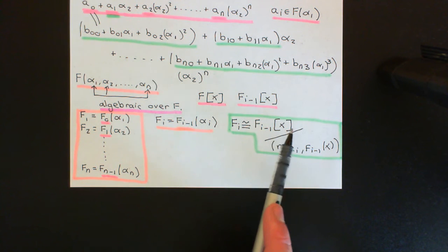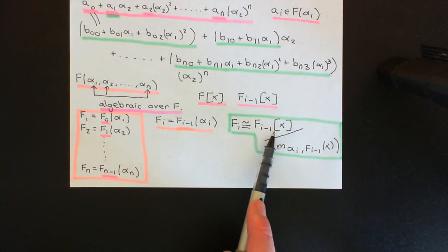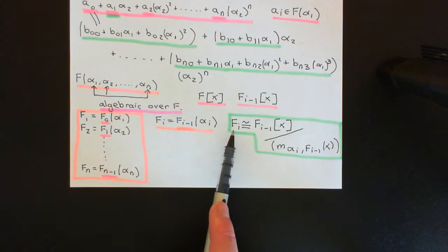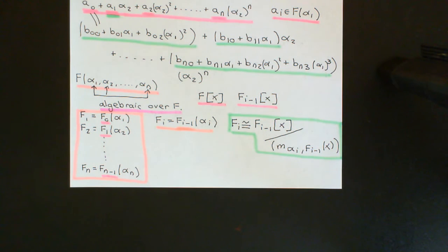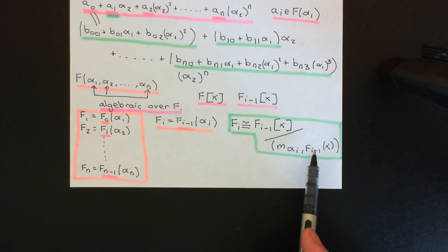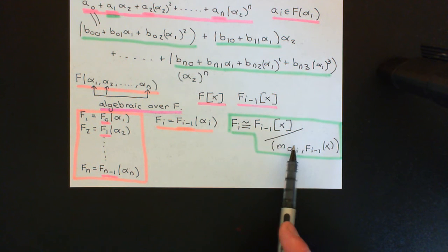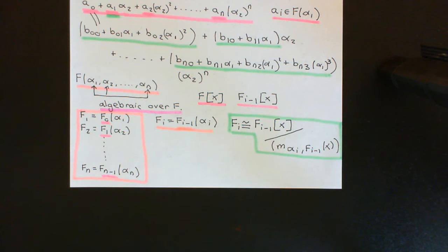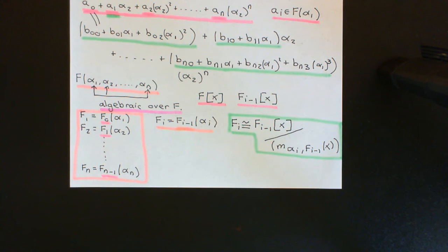The point is that we know exactly how to build this. You can look at the ring of polynomials over the field Fᵢ₋₁ and evaluate every single one of them at αᵢ. You'll get a bunch of answers in L; collect all of those together, and that will be your new field extension Fᵢ. Not all polynomials will give different answers — all elements in an additive coset of the minimal polynomial ideal give the same answer. That's why we want them to be algebraic: so the polynomials loop back around and you don't go on forever getting different answers.